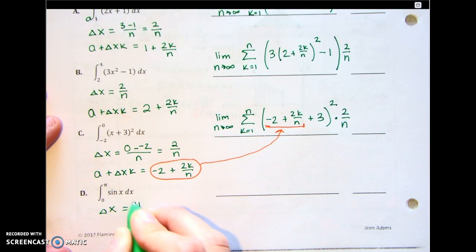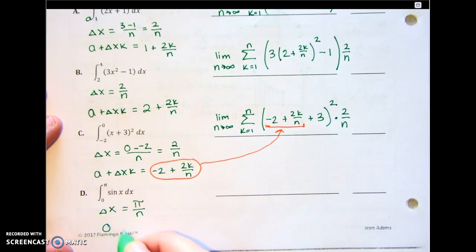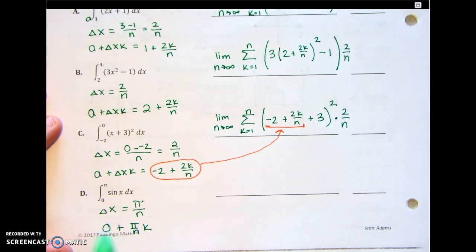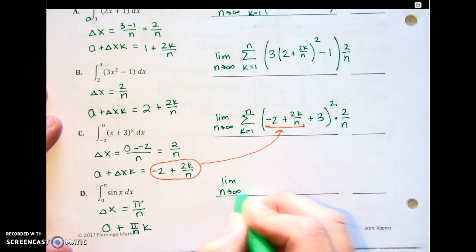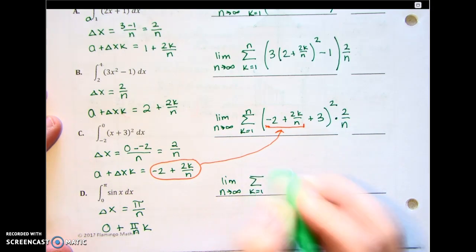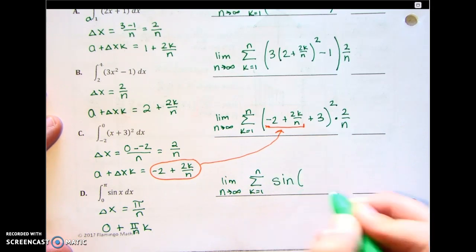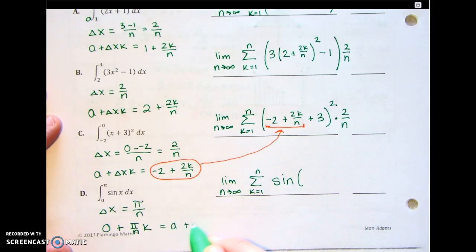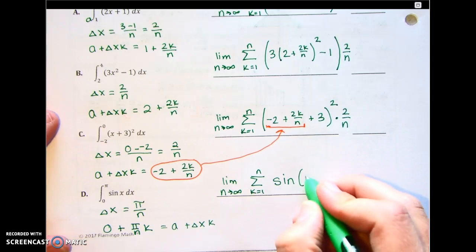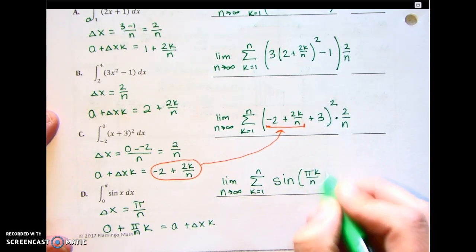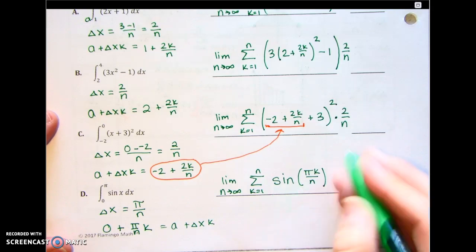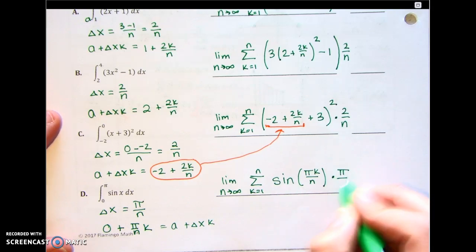For the next example: delta x is pi minus 0 over n — we have a different delta x, it's pi over n. And a plus delta x k is 0 plus pi over n times k. Building it: limit as n goes to infinity of sigma of k equals 1 to n of sine of pi k over n, times delta x. We always need to multiply by change of x.